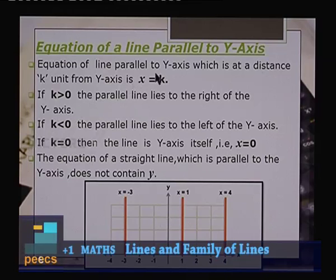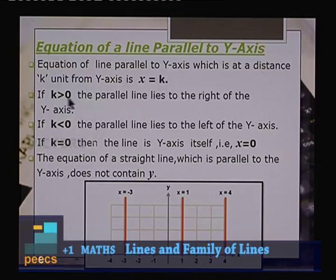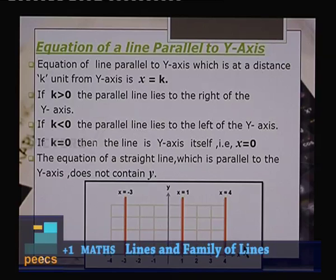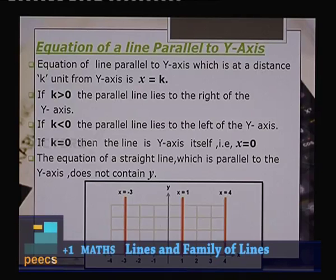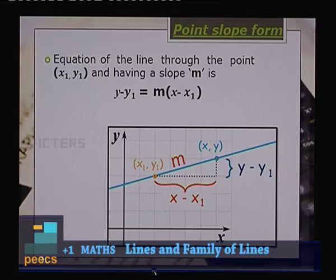The equation of a line parallel to the y-axis at a distance k units from it is x = k. If k > 0, the line lies to the right of the y-axis. If k = 0, the line is the y-axis itself, x = 0. A straight line parallel to the y-axis does not contain the variable y. These give us different types of equations of a straight line.